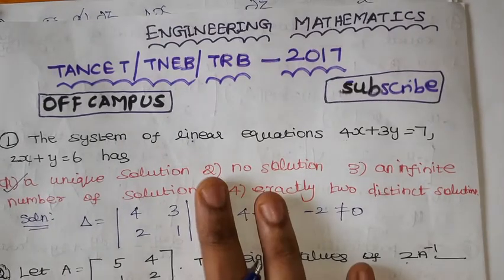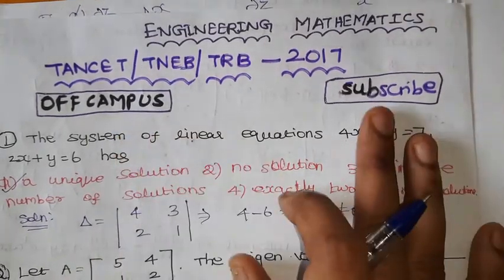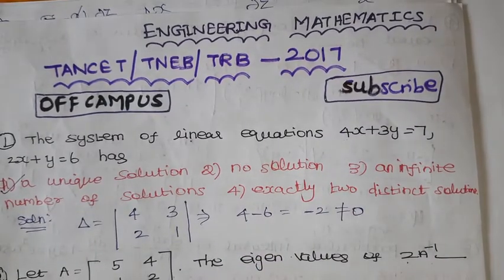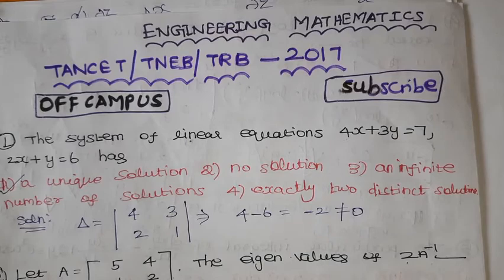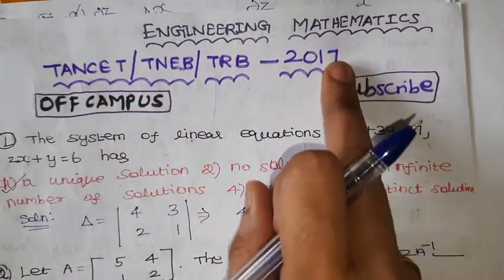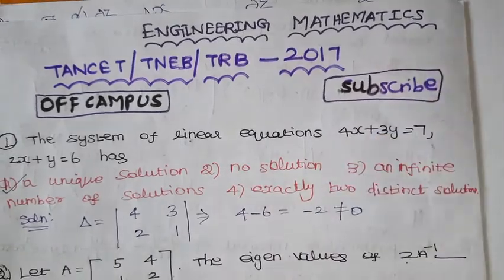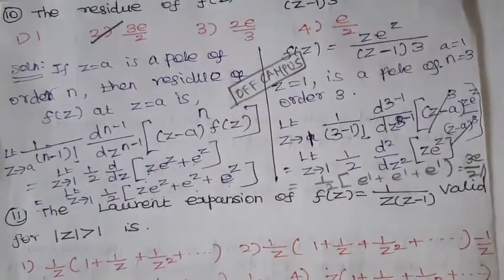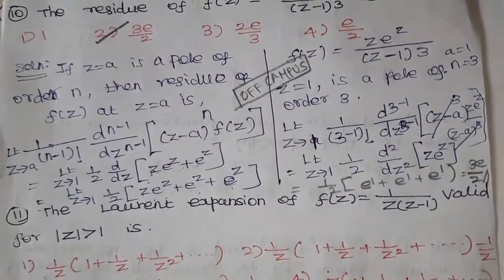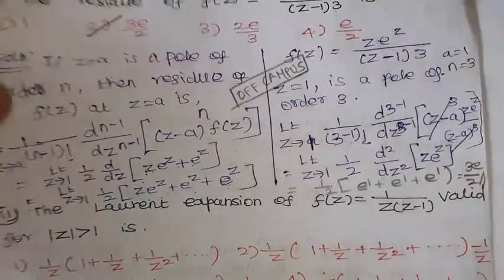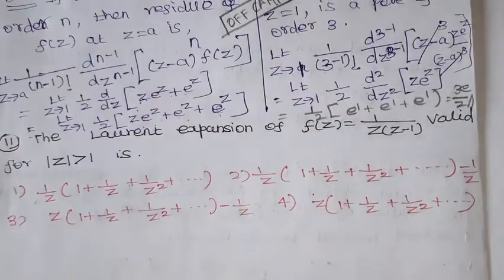Hello everyone, welcome to our channel Off Campus. Kindly subscribe our channel Off Campus and support us. This is the continuation of our previous videos. Previously we solved the TANSET year 2017 problem in Engineering Mathematics from problem number 1 to problem number 10 in two parts. Now we are going to solve from problem number 11. Let us start the video.